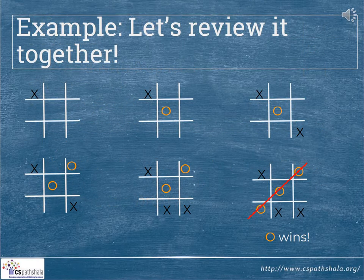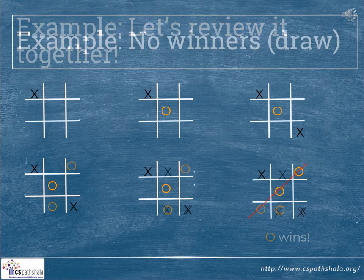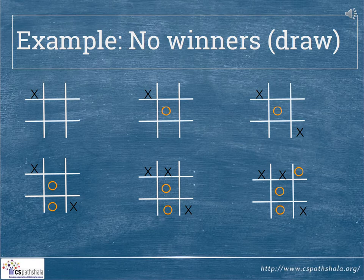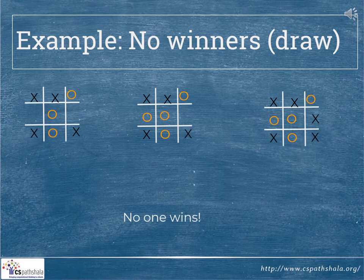Let's review one example together. Take a look at the slide and see how the players have played. Who has put the cross? Who has put the knot and where have they put it? Now take a look at the slide and see how the game unfolds. All 9 spaces are filled up but neither the crosses nor the knots are in a row, so there are no winners. This game is a draw.